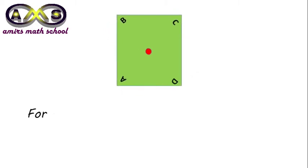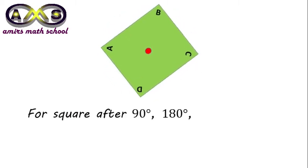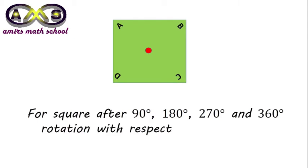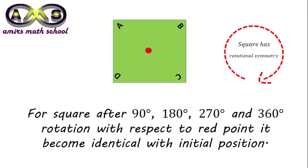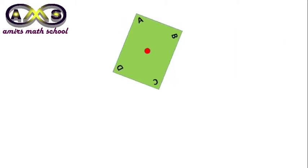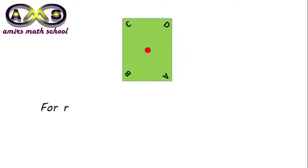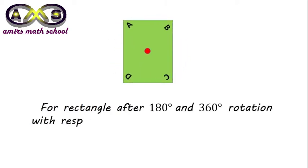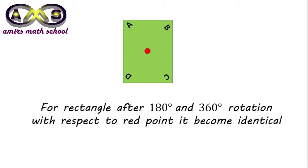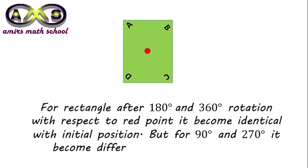For a square, after 90 degree, 180 degree, 270 degree, and 360 degree rotation with respect to the red point, it became identical with the initial position. So, square has rotational symmetry. For a rectangle, after 180 and 360 degree rotation with respect to the red point, it became identical with the initial position. But for 90 degree and 270 degree, it became different from the initial position.